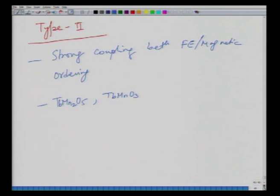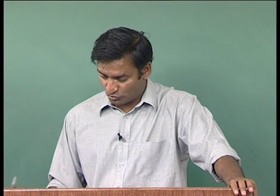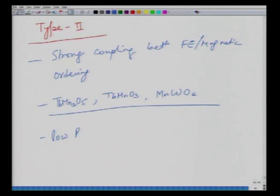Note that TbMnO₃ is hexagonal but belongs to Type 2 — hexagonal structure is common to both classes. Type 2 multiferroics have a low polarization of the order of nanocoulombs per cm², about two or three orders of magnitude smaller than Type 1 multiferroics, though they have strong coupling between ferroelectric and magnetic properties.